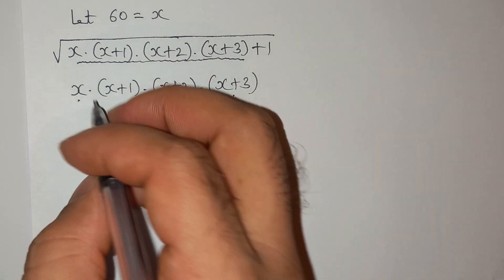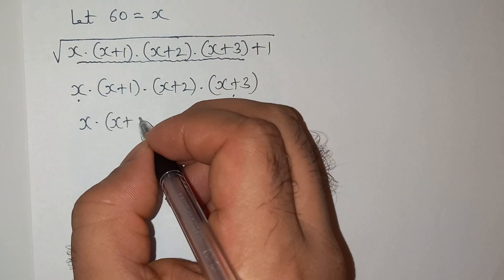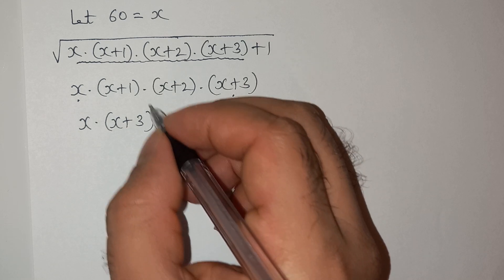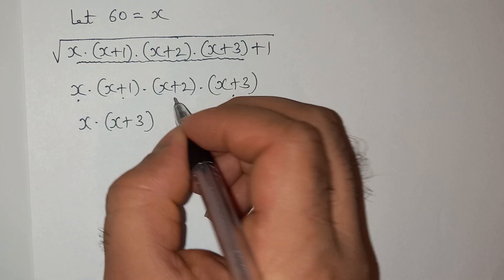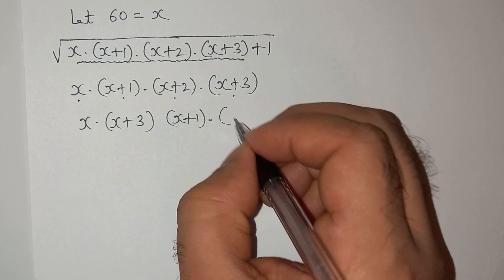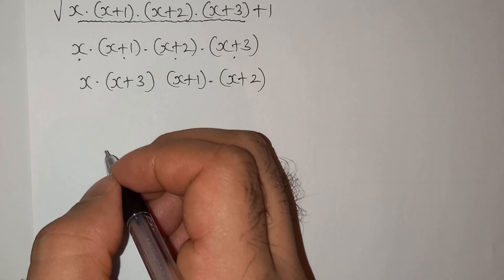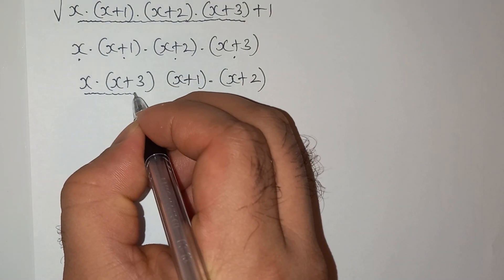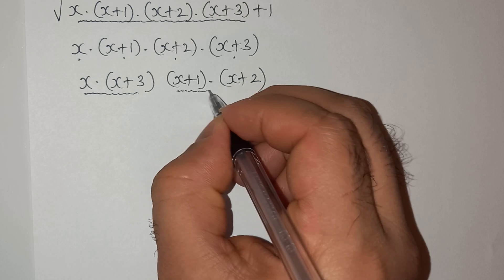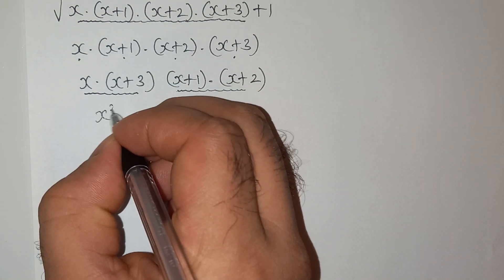Now I will first multiply this x with (x+3), so x multiplied by (x+3), then this (x+1) with (x+2), so (x+1) multiplied by (x+2).